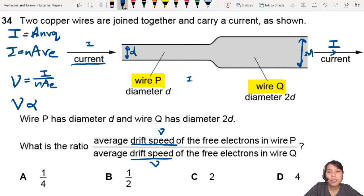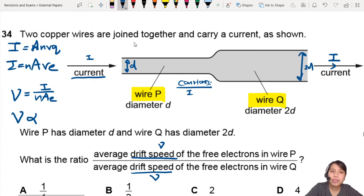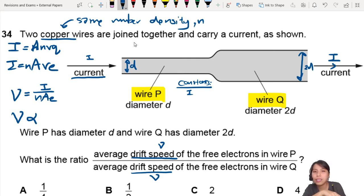Constants: I. What's N? N in the equation means number density. Number density depends on the material. If they are both copper wires, they have the same number density. Number density means how many charge carriers can you have. Copper is the element that has a certain number of free electrons for each atom. So if they are both copper, they have the same number density. So this is constant also.